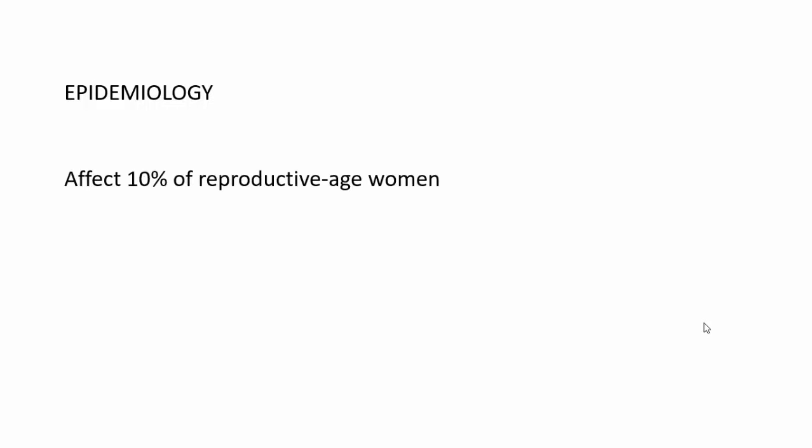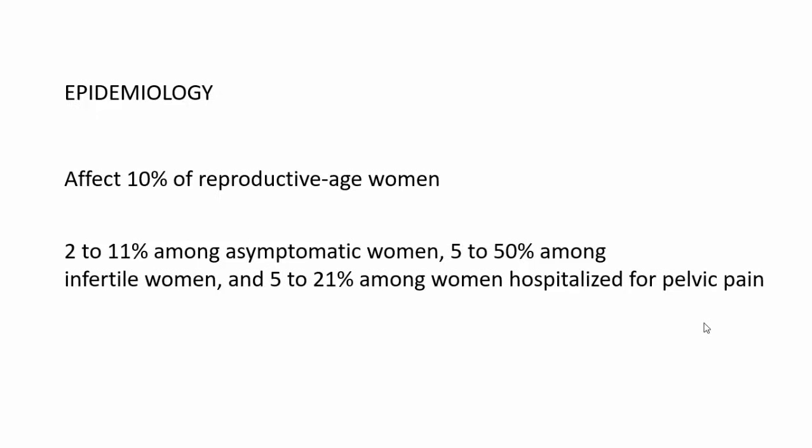Moving on to epidemiological aspects: it affects 10% of reproductive age women. Among asymptomatic women, the presence of endometriosis can range from 2 to 11%, and 5 to 50% among infertile women, and around 5 to 21% among women hospitalized for pelvic pain. If an individual is symptomatic and an adolescent, the chances of having endometriosis is 49 to 75%.